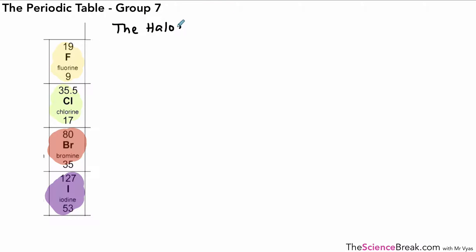The title or the name of the group is called the halogens. And there are a few key points which we need to make sure we know about the halogens. The first one is that they are all non-metals, not all solid though. Fluorine and chlorine are gases, bromine is a liquid and iodine is a solid all at room temperature.